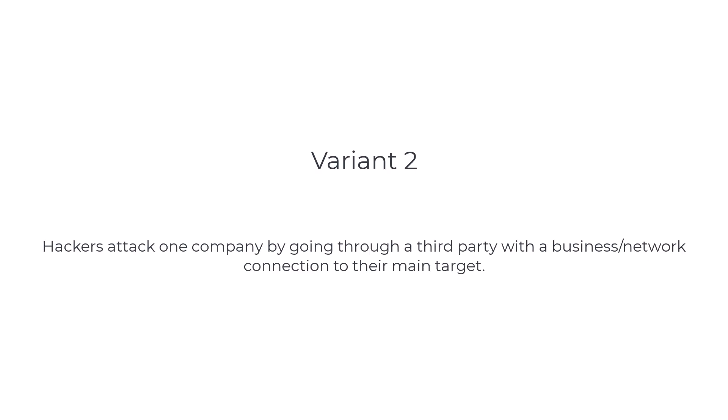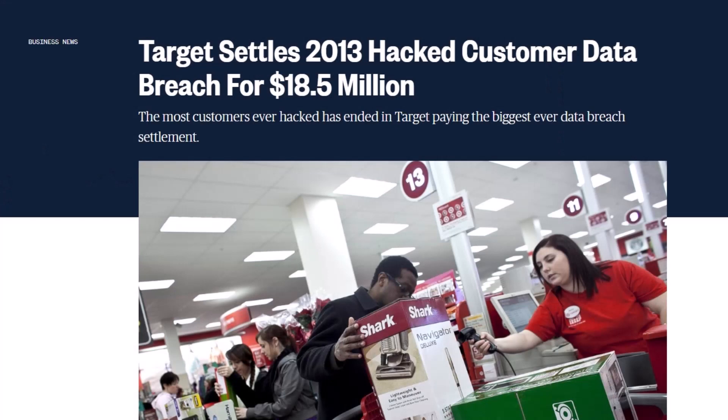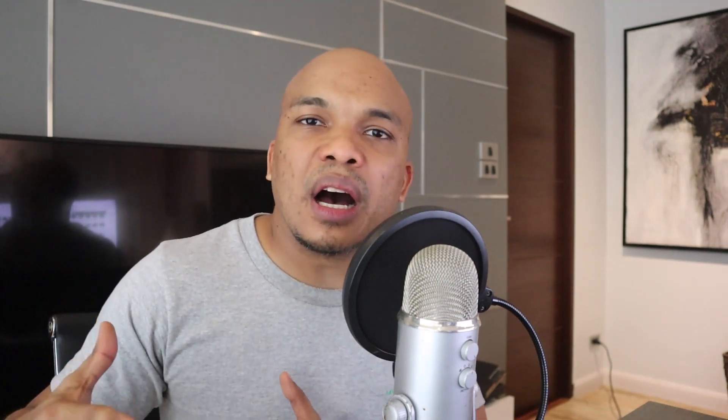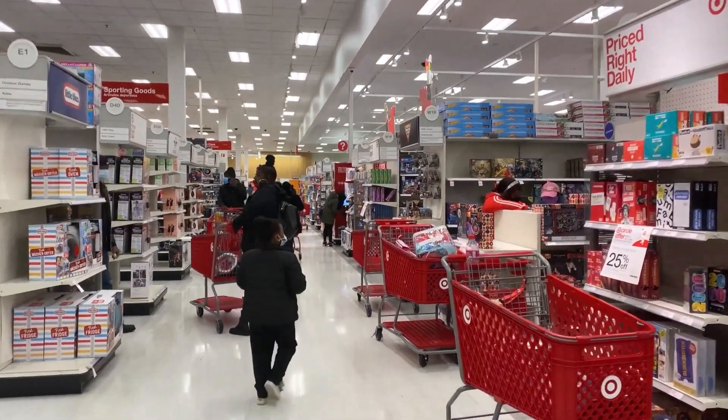The second variant is the classic supply chain attack, where cyber criminals attack a particular company by going through a third-party company that has access to the actual target. The best example of this would be the cyber attack against Target back in the year 2013. Target is a very large supermarket chain in the United States.